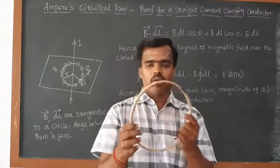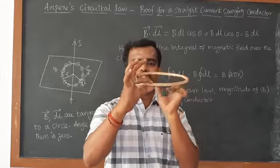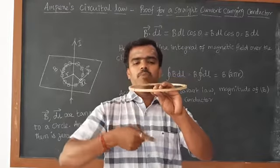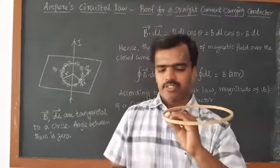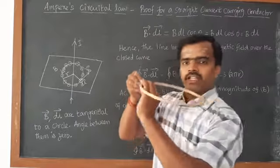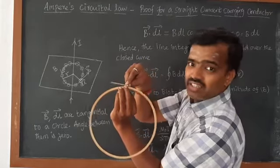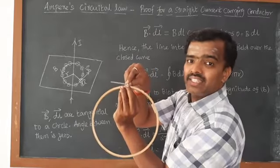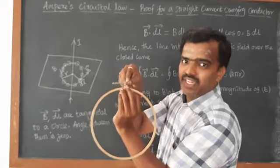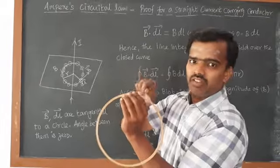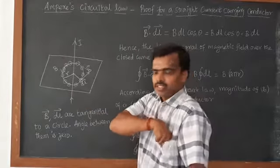I am going to consider only this part. The dL will be acting in the tangential direction — tangential means at that point. At that point, dL contacts along the tangent. The magnetic field is also directed along the tangential direction. Both dL and the magnetic field are acting tangentially. In this diagram, this is the current flowing out of the paper.